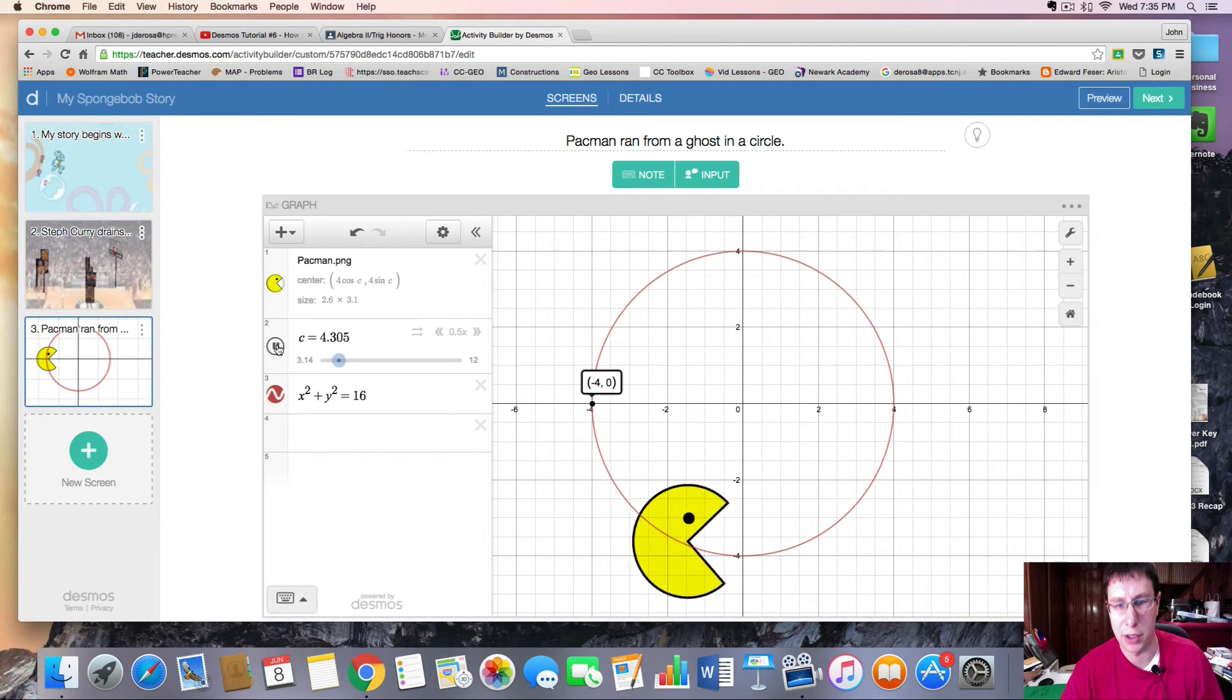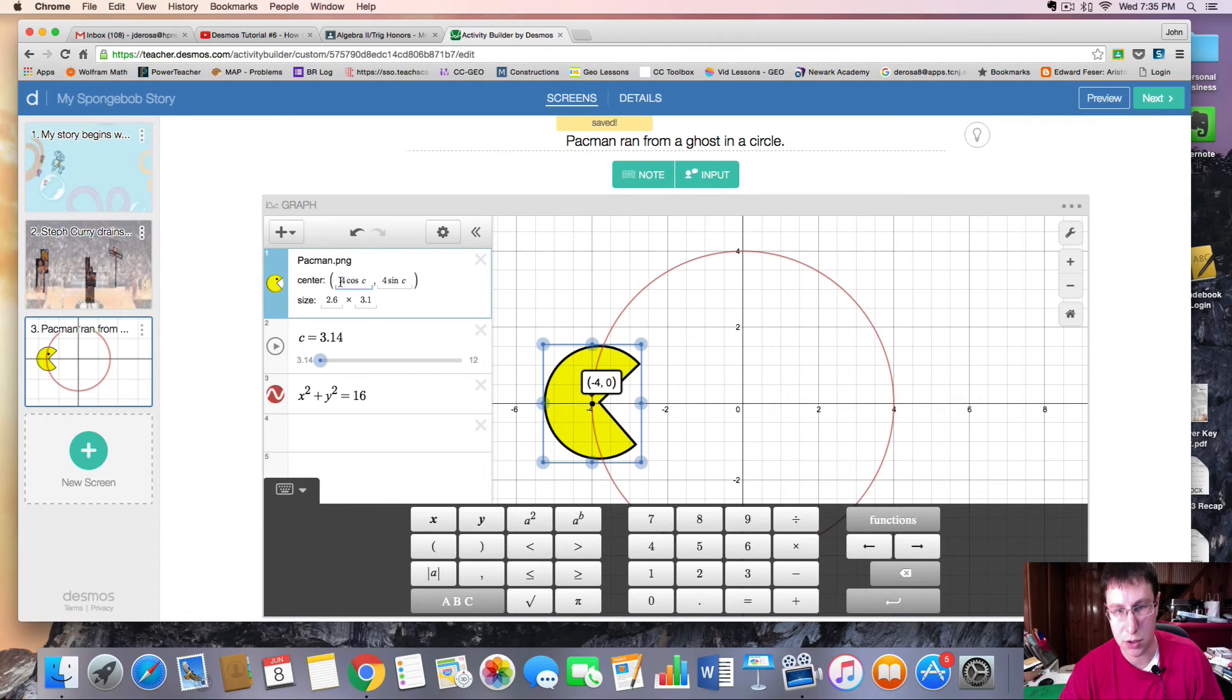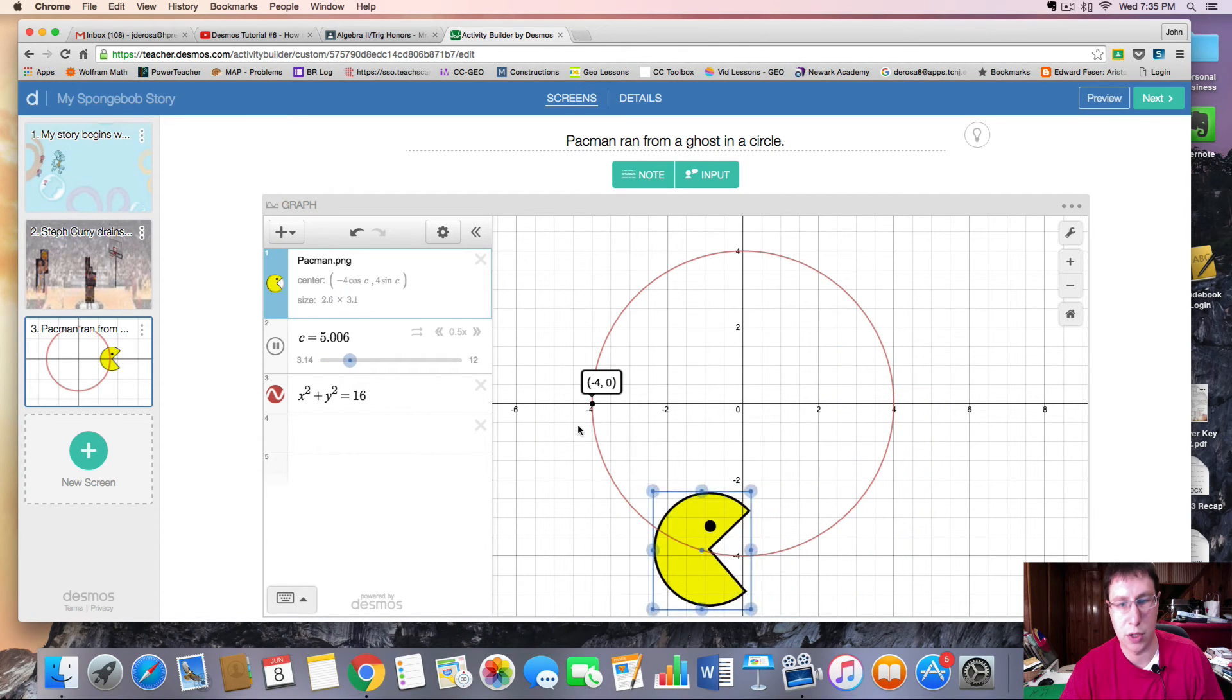Perhaps you don't like him going this direction. You want him to go the other way around. Well, simply, instead of a positive sign, we can change this to a negative. And he will travel the other direction. So just think of how we do transformation of trig functions. And that will allow you to change your circular motion.